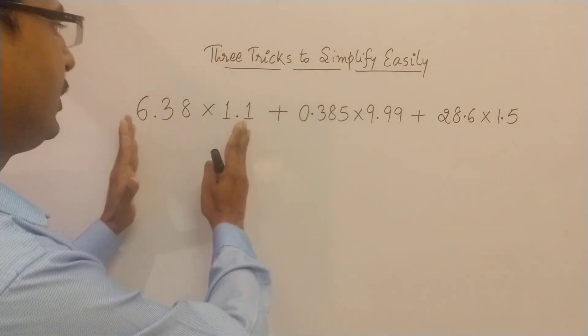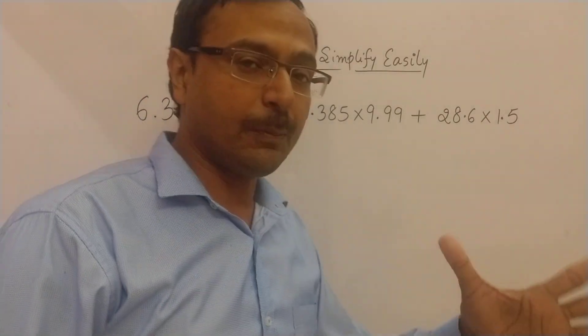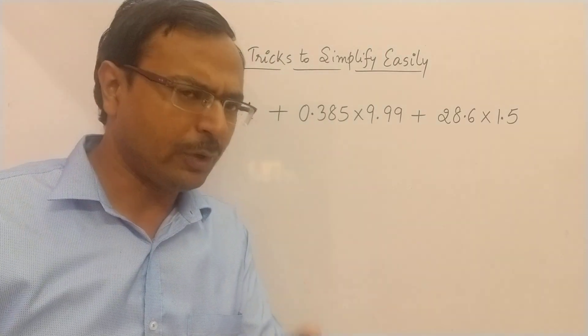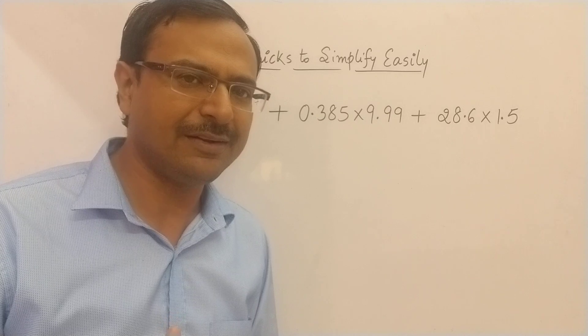But if you know the tricks to multiply by 1.1, multiply by 9.99, multiply by 1.5, all decimal multiplications, then this will consume only 10 to 15 seconds time. So let me demonstrate how this can be done easily.